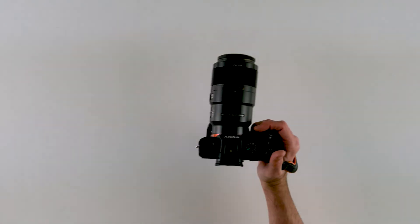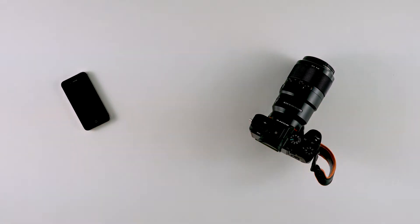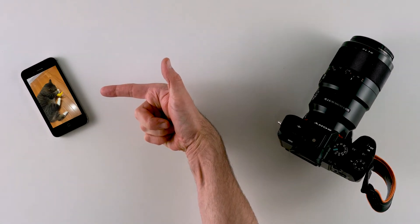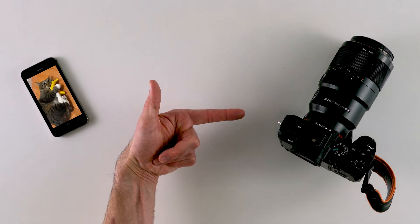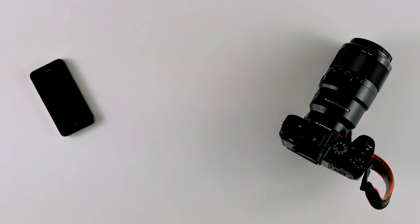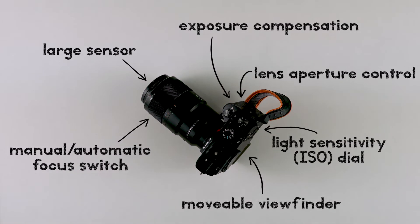Library databases are to Google what a big fancy interchangeable lens camera is to your phone's camera. Your phone is good enough for selfies and cute kitty videos, but if you want the best photos, you need a serious pro-level camera. Yeah, it's way more complicated than your phone's camera and it takes time to learn, but it gives you tremendous control over your photography.